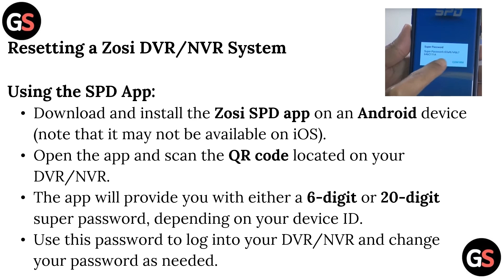Download and install the Zawzi SPD app on an Android device. Note that it may not be available on iOS. Open the app and scan the QR code located on your DVR or NVR device. The app will provide you with either a 6-digit or 20-digit super password, depending on your device ID.